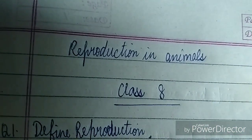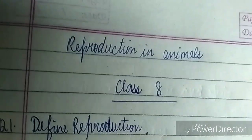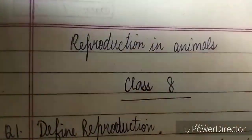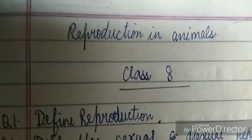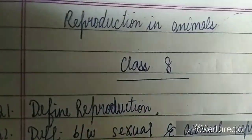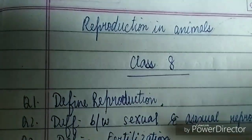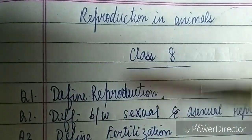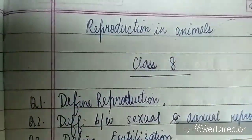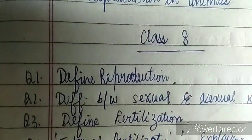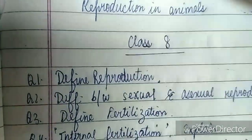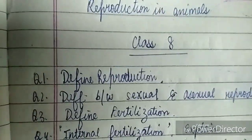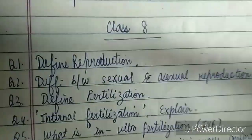Welcome everybody to my channel Study Junction. I'm going to tell you the important questions from Reproduction in Animals, Class 8 chapter. First of all, in the short questions we have 'define reproduction' — it's a basic question, not very important, but you still need to know what reproduction basically is.